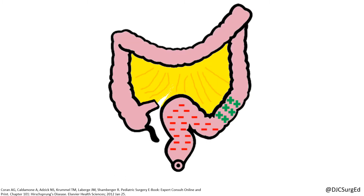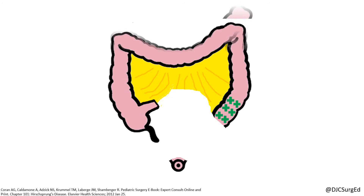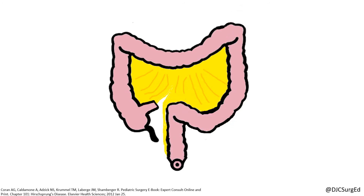The goals of treatment are to remove the aganglionic bowel and reconstruct the colon by bringing normally innervated bowel down to the anus while preserving sphincter function. Three of the most well-known procedures are the Swensen, Suave, and Duhamel procedures.